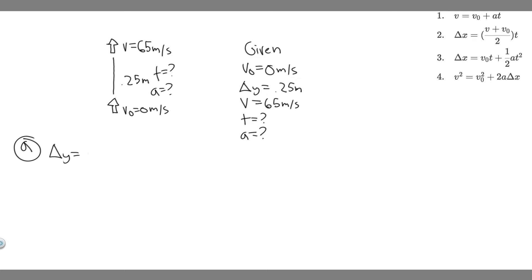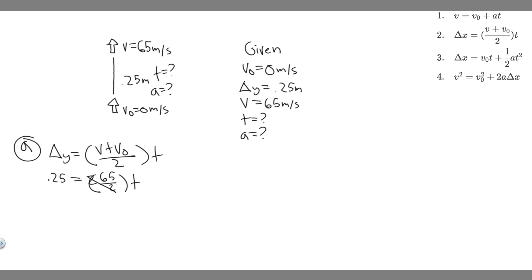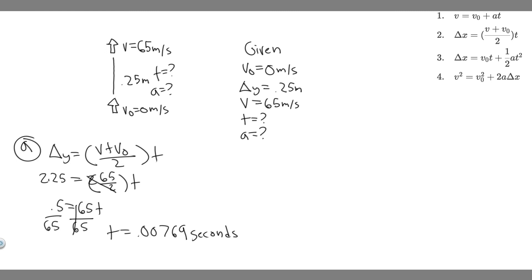Plugging in: delta Y equals (V + V₀) divided by 2, times T. So 0.25 equals (65 + 0) divided by 2, times T. Since 65 + 0 is just 65, we have 0.25 equals 65/2 times T. Multiplying both sides by 2 gives 0.5 equals 65 times T. Dividing both sides by 65, we get T equals 0.5 divided by 65, which equals 0.00769 seconds. Time is measured in seconds because we're using meters per second. This is your answer to Part A.